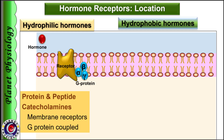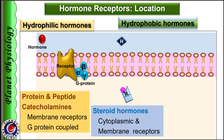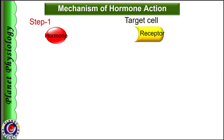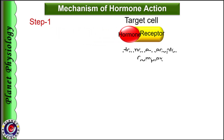Receptors for lipid soluble hormones like steroid hormones are located within the cytoplasm and are called cytoplasmic receptors, while receptors for thyroid hormones are located within the nucleus of the target tissue and called nuclear receptors. Binding of hormone to its receptor forms hormone-receptor complex.